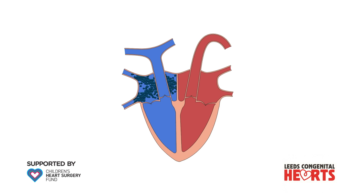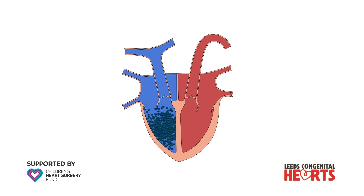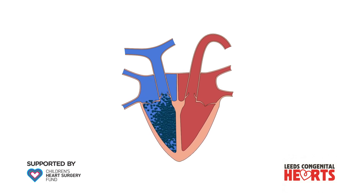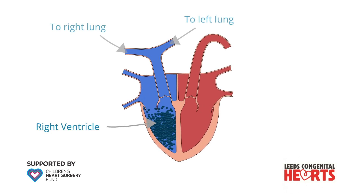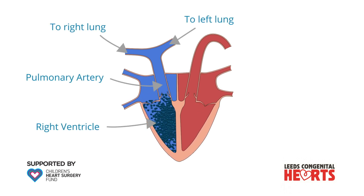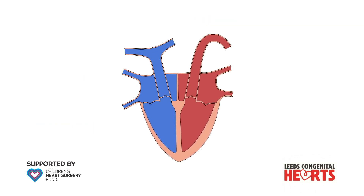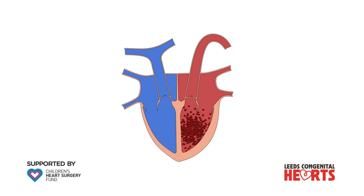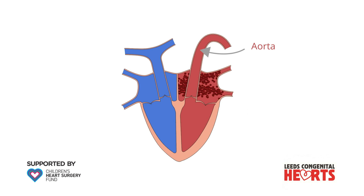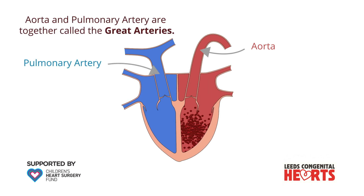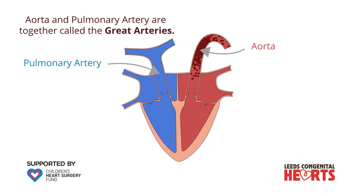In the normal circulation, blood that is low in oxygen returns from the body in veins to the right side of the heart, where it is pumped from the right ventricle to the lungs through the pulmonary artery. Blood picks up oxygen in the lungs and returns to the heart where it is pumped from the left ventricle to the body through the aorta. The aorta and pulmonary artery are together referred to as the great arteries.